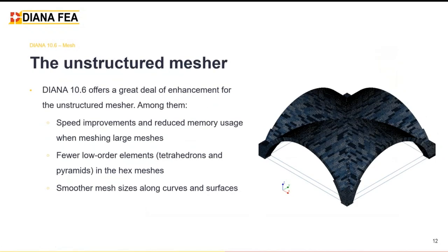We also made improvements to unstructured meshing in Diana 10.6. We improved the speed for generating an unstructured mesh and reduced memory usage — benefits especially visible for large meshes. We decreased the presence of low-order elements in hexahedral dominant meshes, meaning fewer tetrahedron and pyramid elements that can be problematic in nonlinear analysis, resulting in better results. Finally, we achieved a smoother mesh along curves and surfaces of geometric models — better performance, lower memory usage, and a higher-quality mesh.